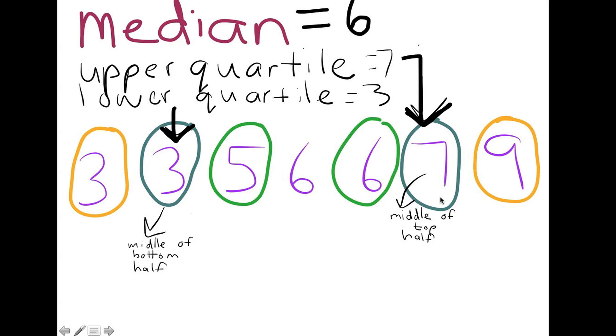In this case, it is seven because seven is the middle of the top half. The lower quartile is three because three is the middle of the bottom half of the numbers.